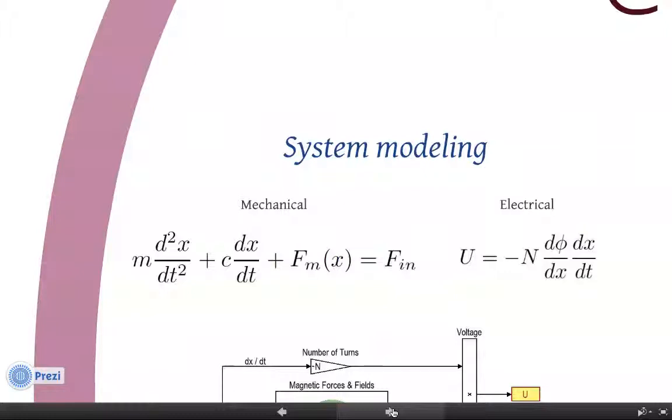In the electrical part, we have the induced voltage in the coil, which equals n number of coil turns multiplied by the gradient of the magnetic flux multiplied by the velocity of the moving magnet. The last two terms represent the rate of magnetic flux change in time.